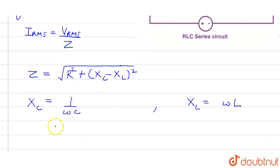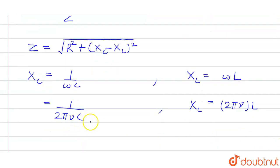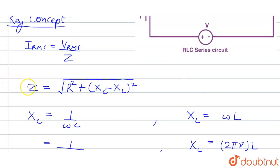Omega is given by 2πν, so we can write this as 1 upon 2πνC and X_L equals 2πνL. So in the question we are given ν, C, and L, so we can find X_C and X_L. Once we find X_C and X_L we can put that in the expression for impedance. Once we get the impedance we can put that in the I_RMS expression.